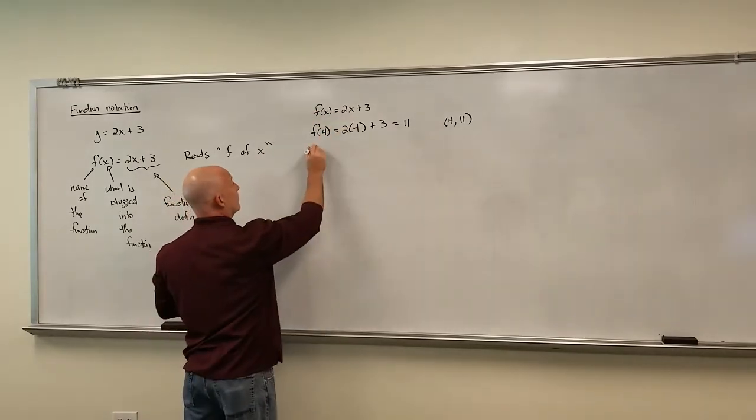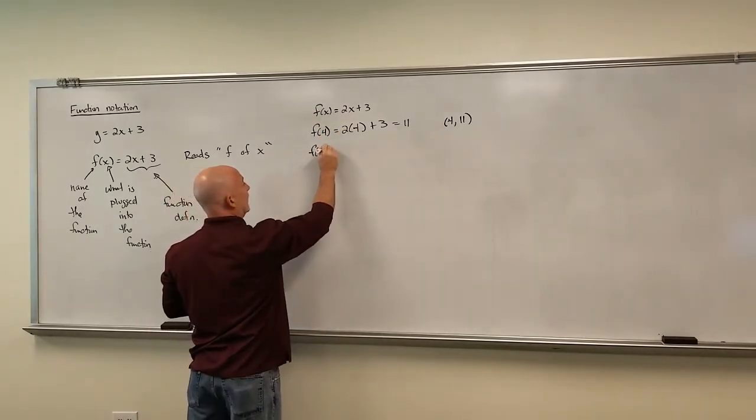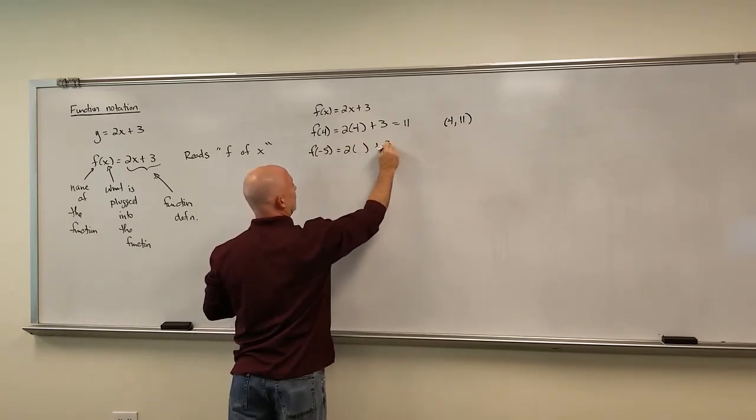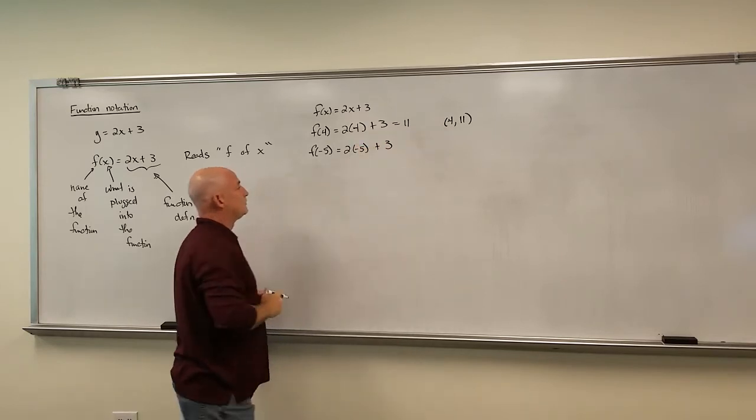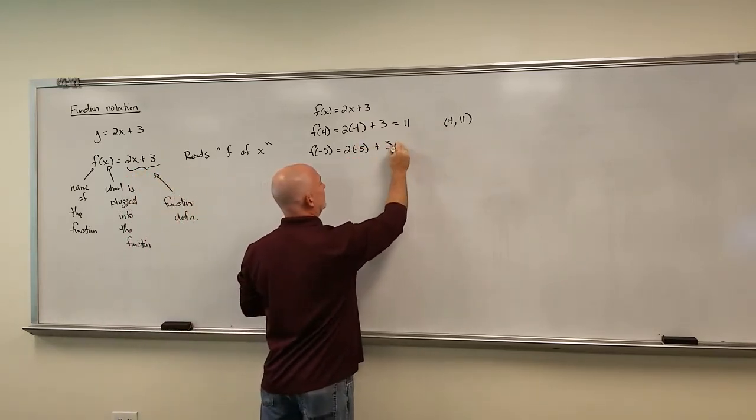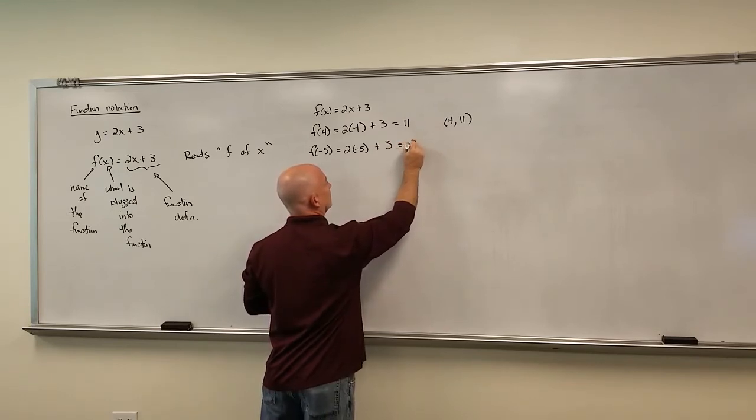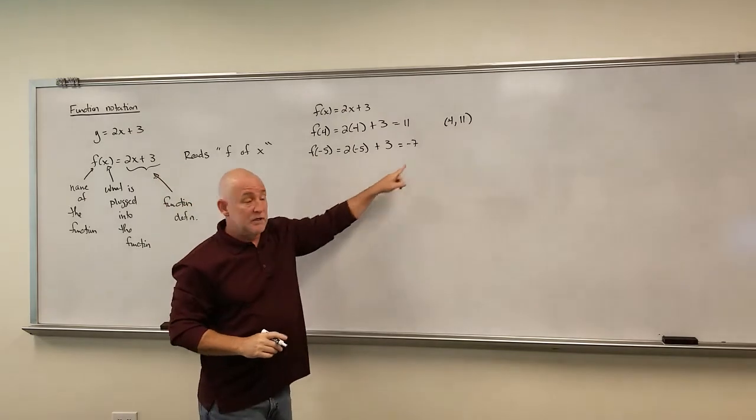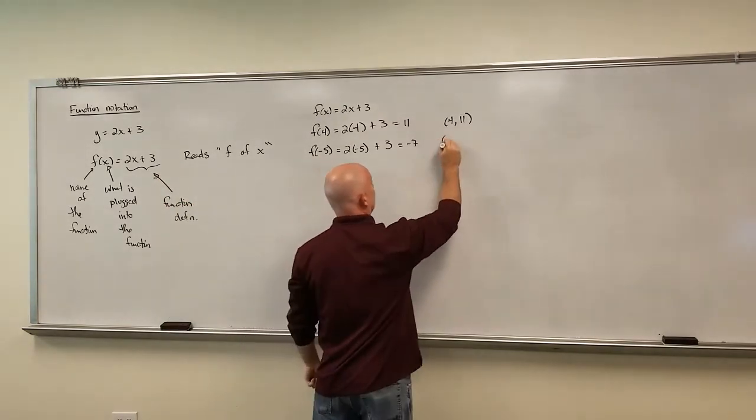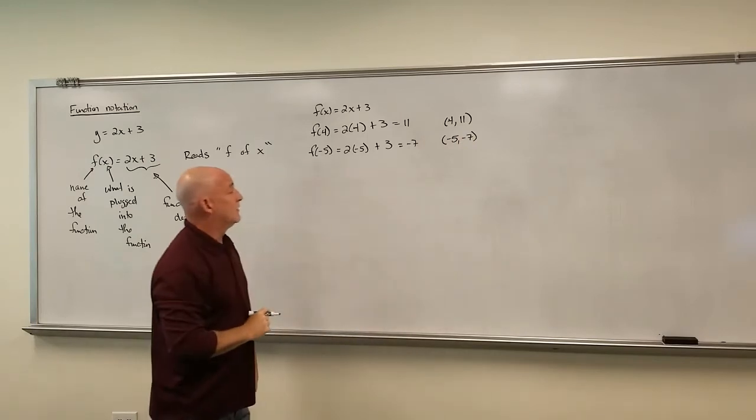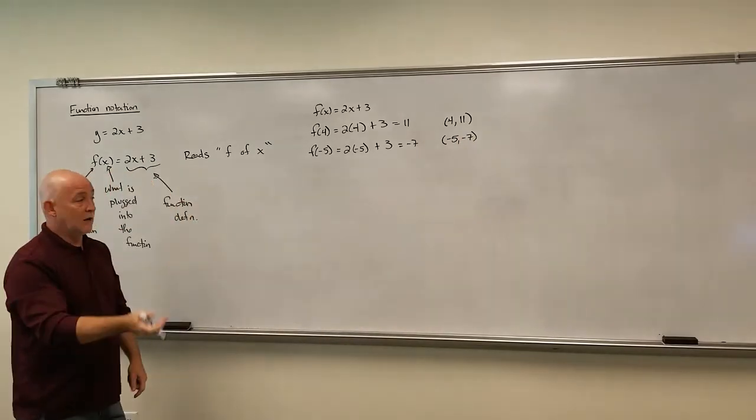So what if I said, what is f of negative 5? Well, that says take that expression f and everywhere that there's a spot, plug in a negative 5. So if I plug in a negative 5, that'd be what? Negative 10 plus 3 would be negative 7. So the domain was negative 5, the range was negative 7. Or another way of thinking about that is I plugged in a negative 5, I get out a negative 7. Plugged in an x, got a y value out.